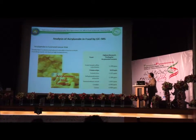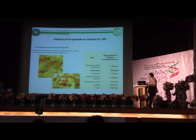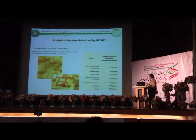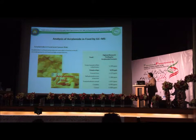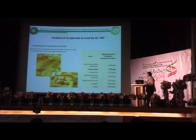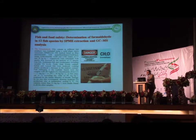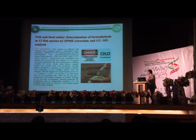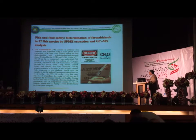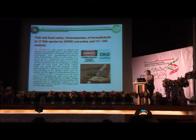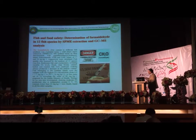We also count the analysis of acrylamide, which is harmful to humans. It is formed in potato chips because of the high-temperature heat treatment of food. Another use of GC-MS is the determination of formaldehyde, which is used as an additive to fish or cheese to extend storage time. This is harmful and dangerous for humans, and we can detect it by GC-MS.